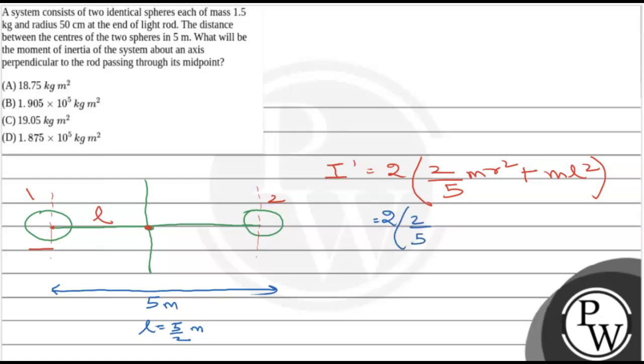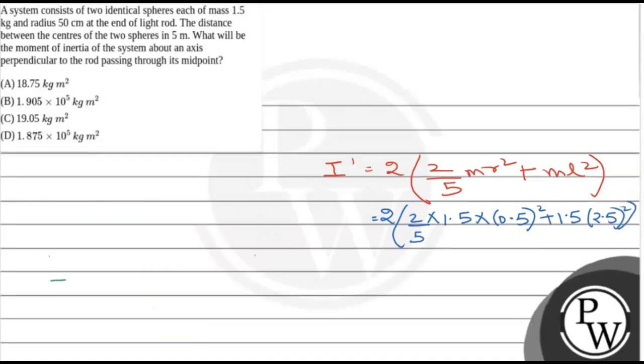2/5, mass is 1.5, radius is 0.5 squared, plus mass is 1.5, length is 2.5 squared. So on calculation, the moment of inertia of the system comes out to be 19.05 kg m². So the final answer is I equals 19.05 kg m².